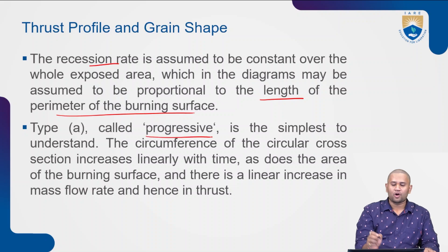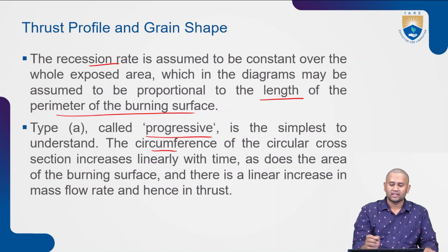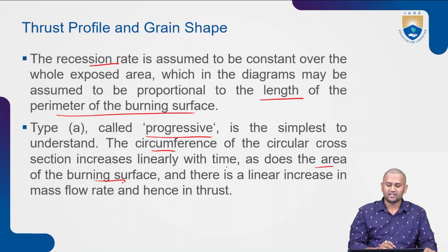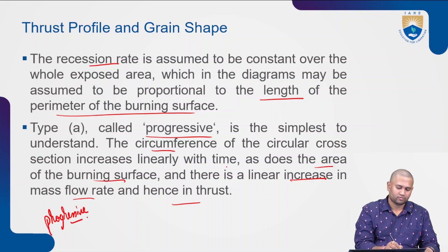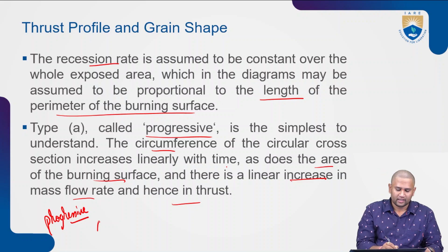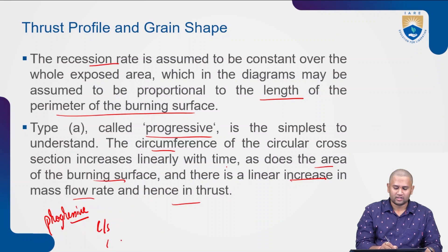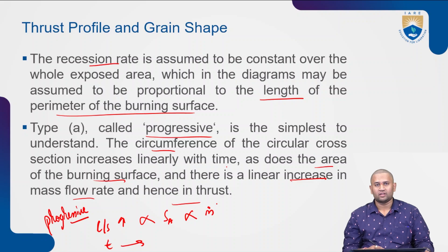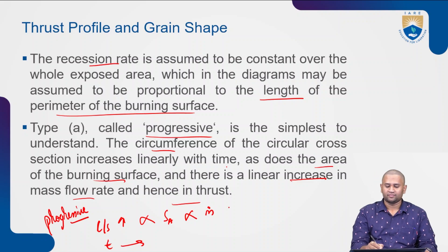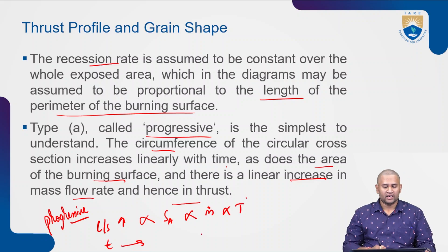Type A is called a progressive burn. The circumference of the circular cross-section increases linearly with time, and so does the area of the burning surface, giving a linear increase in mass flow rate and hence thrust. As time progresses, the cross-section increases, which in turn increases the surface area, which increases the mass flow rate of the expelled gases, which again increases the thrust. This is called a progressive burn.